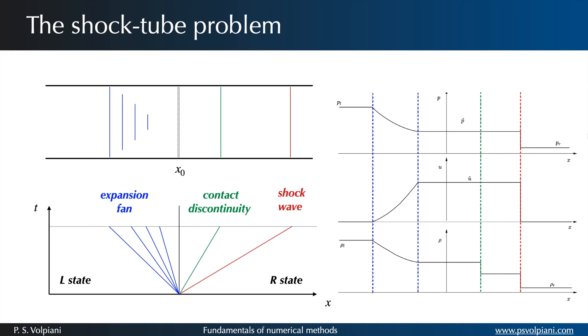Contact discontinuities are surfaces that separate zones of different density and temperature. By definition, this surface is in pressure equilibrium and no gas flows across it.